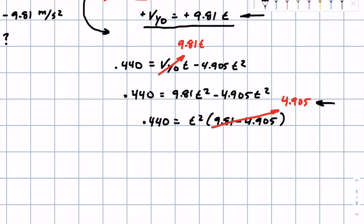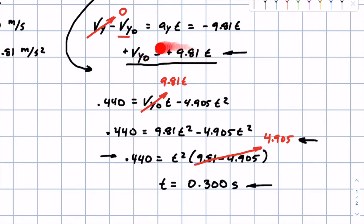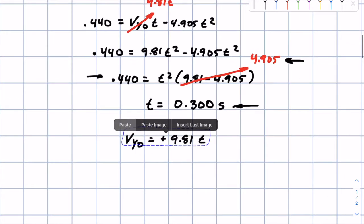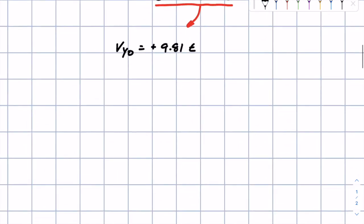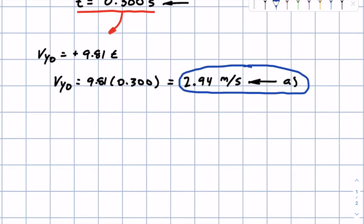By dividing 4.905 over, we isolate t² and take the square root, giving us a value for t of 0.300 seconds. Now we go back to the short equation and solve for v_y0: v_y0 = 9.81 × 0.300, which gives us 2.94 meters per second. Part A is done — only needing two equations.